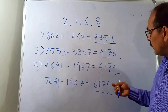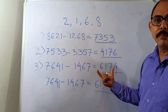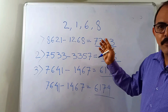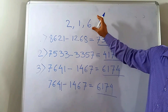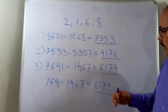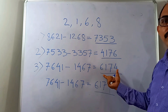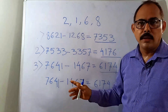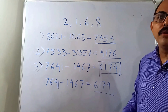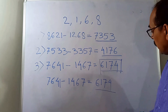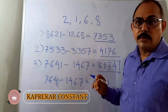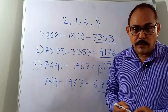This number 6174 has become a fixed number — a constant. If you try the same operation with any four-digit number and follow these steps, after a maximum of seven steps you will always arrive at 6174. Any four-digit number you take, you will see this number appearing at the end after five, six, or seven steps. This number is known as the Kaprekar constant.